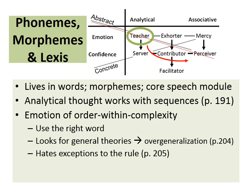Stating this more precisely: teacher emotion is based in order within complexity. This means there must be many items — that's the complexity — and they must fit together in a uniform manner — that is the order. Think of it as a king and his subjects. If the king has no subjects, there is order but not complexity. If the king has many subjects who do not obey him, there is complexity without order. The maximum teacher emotion comes when there is a king with many subjects who obey him.